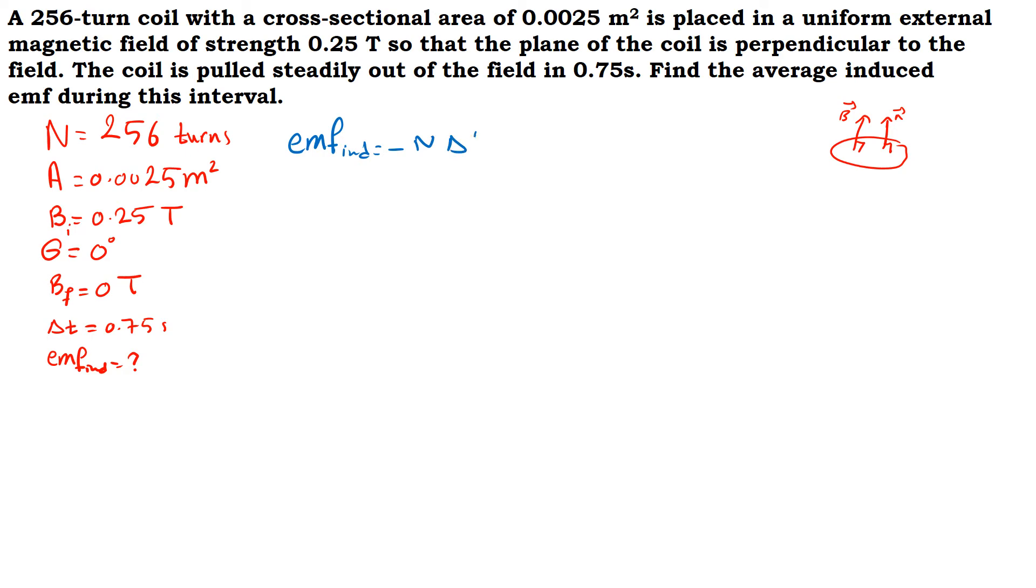We know that the formula for EMF is equal to minus N delta, the change in magnetic flux over time. So it's equal to minus N delta, where the magnetic flux is B A cosine theta over delta t.